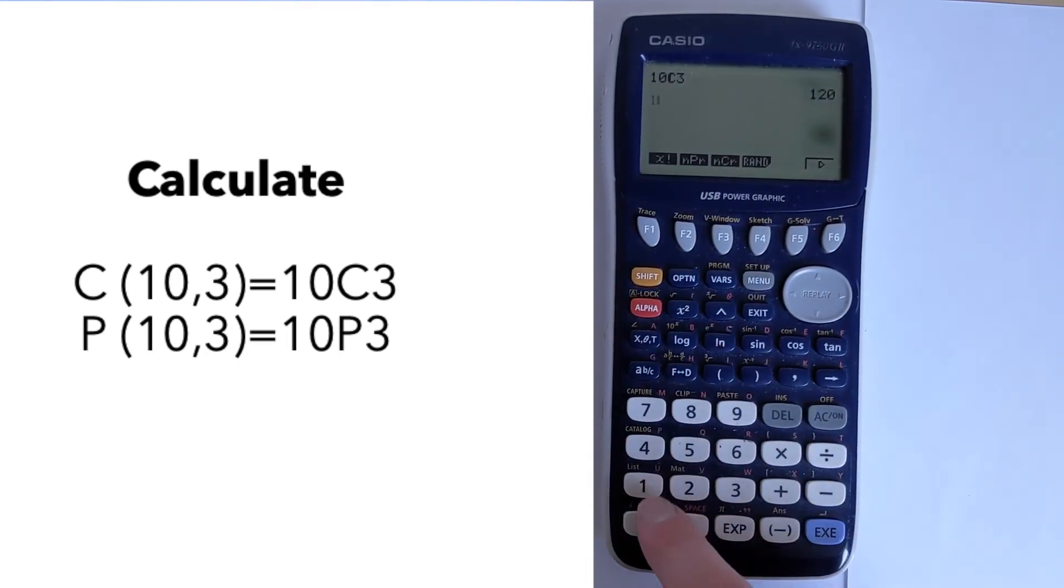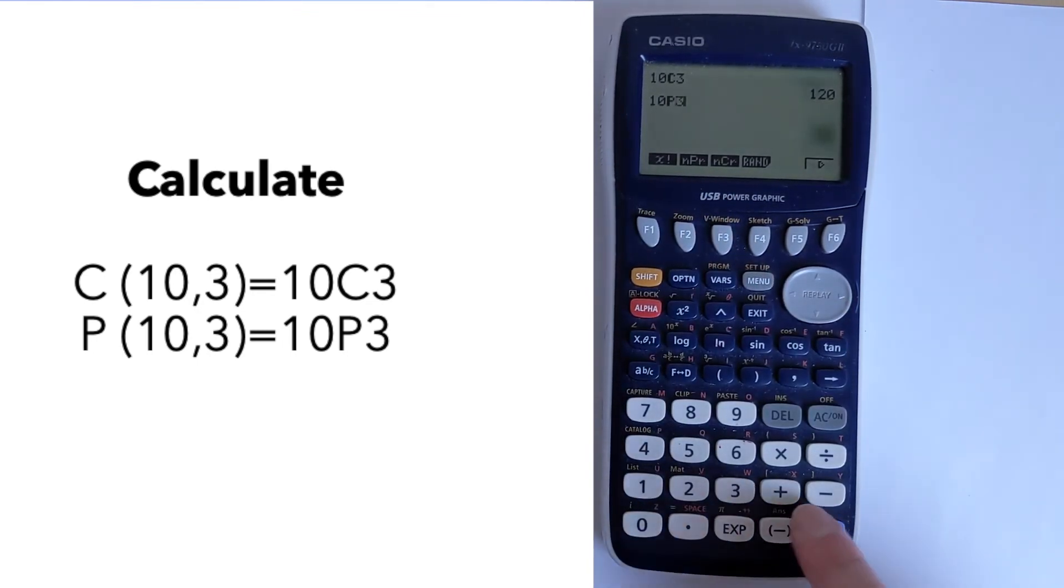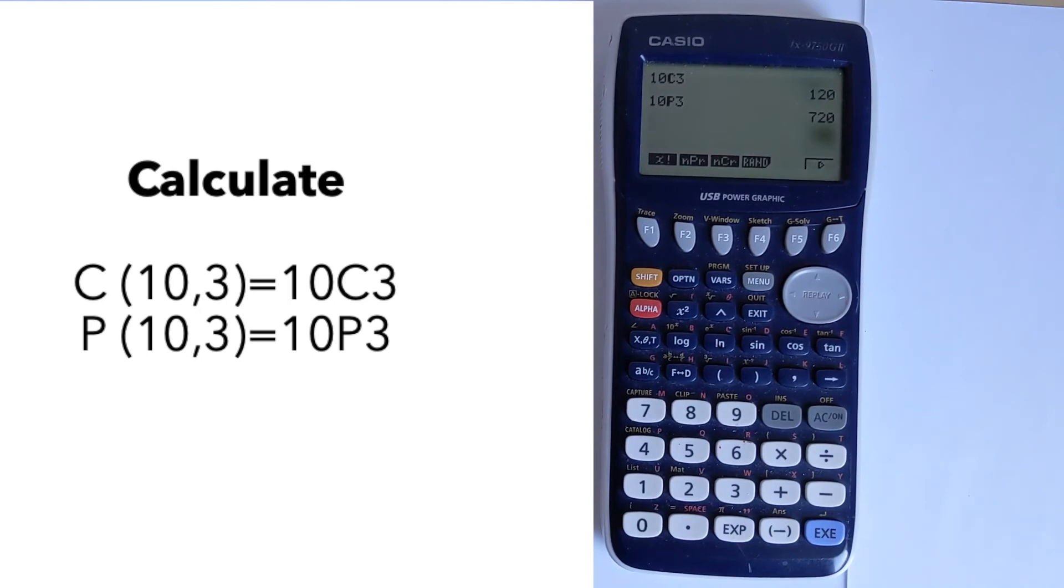In exactly the same way, you put in your N, then you do permutation, and then 3, and then you evaluate that, and that gives you your permutation.